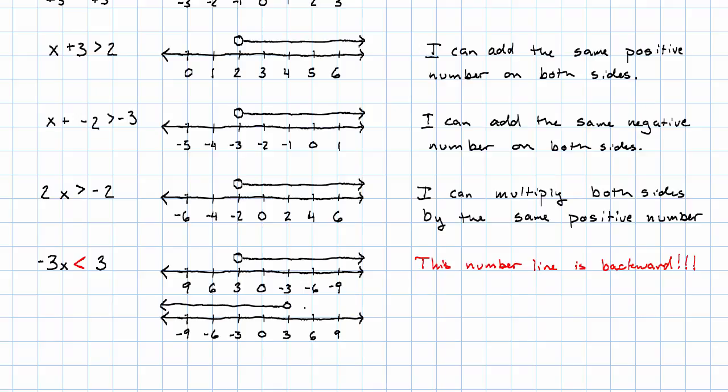Because multiplying by that negative number flipped the number line around. I can multiply both sides by the same negative number. But when I do, I have to reverse the inequality symbol.